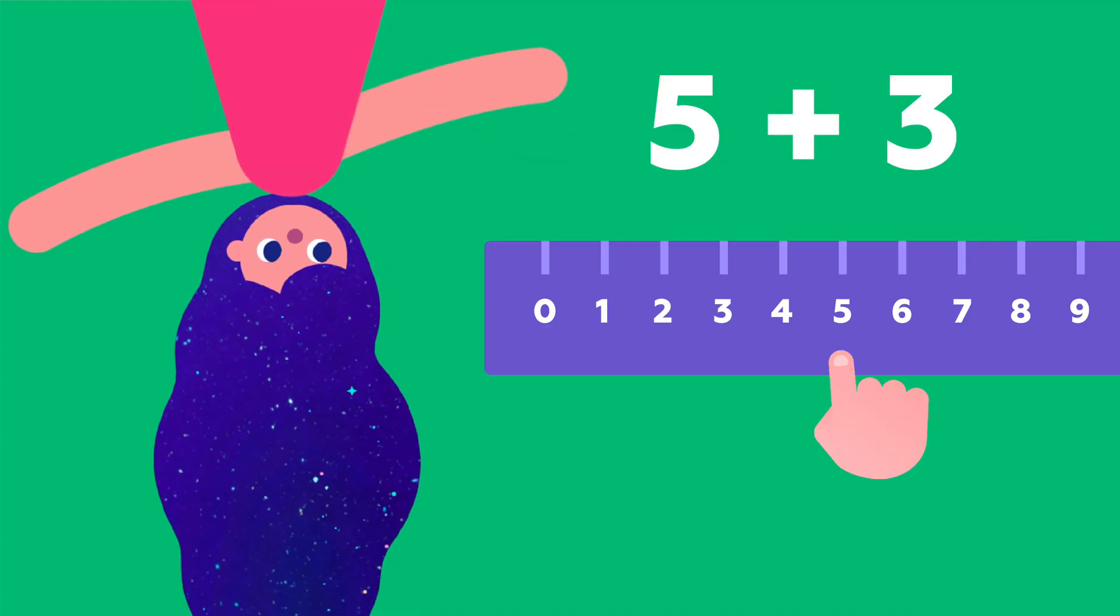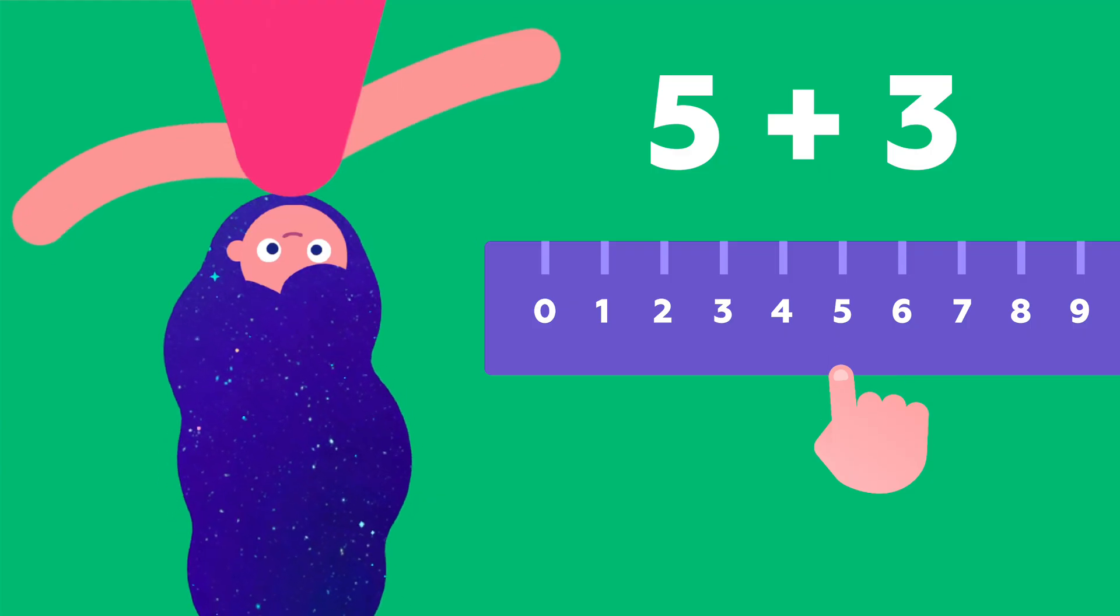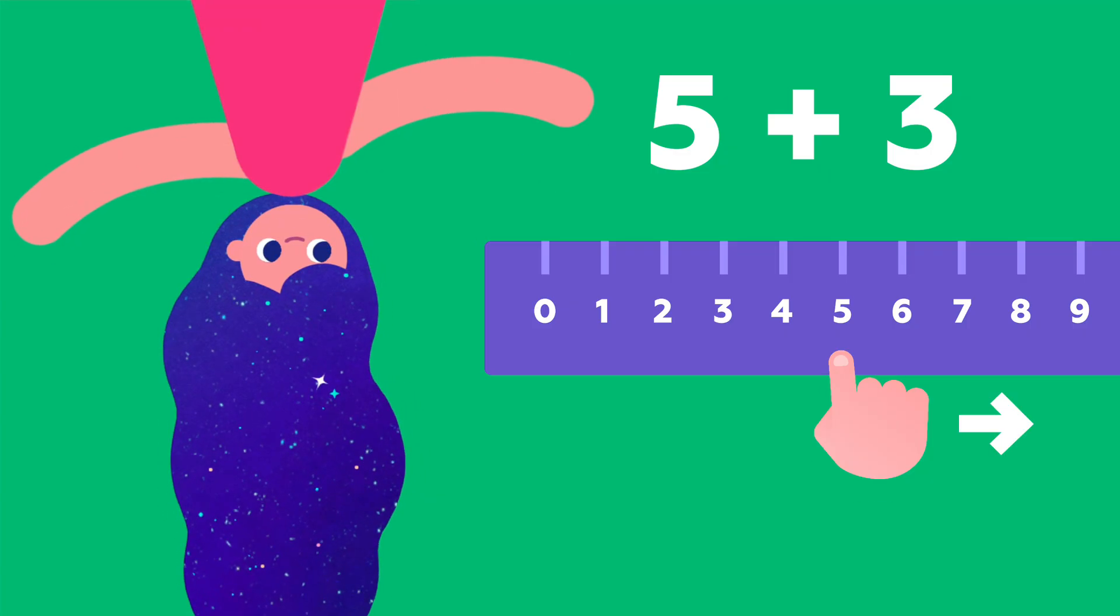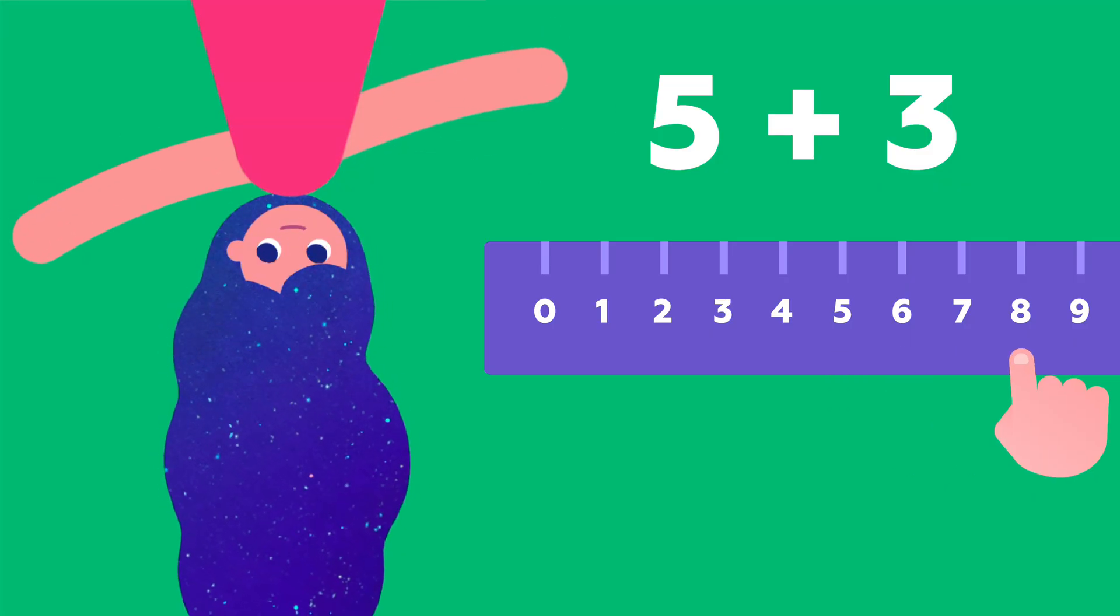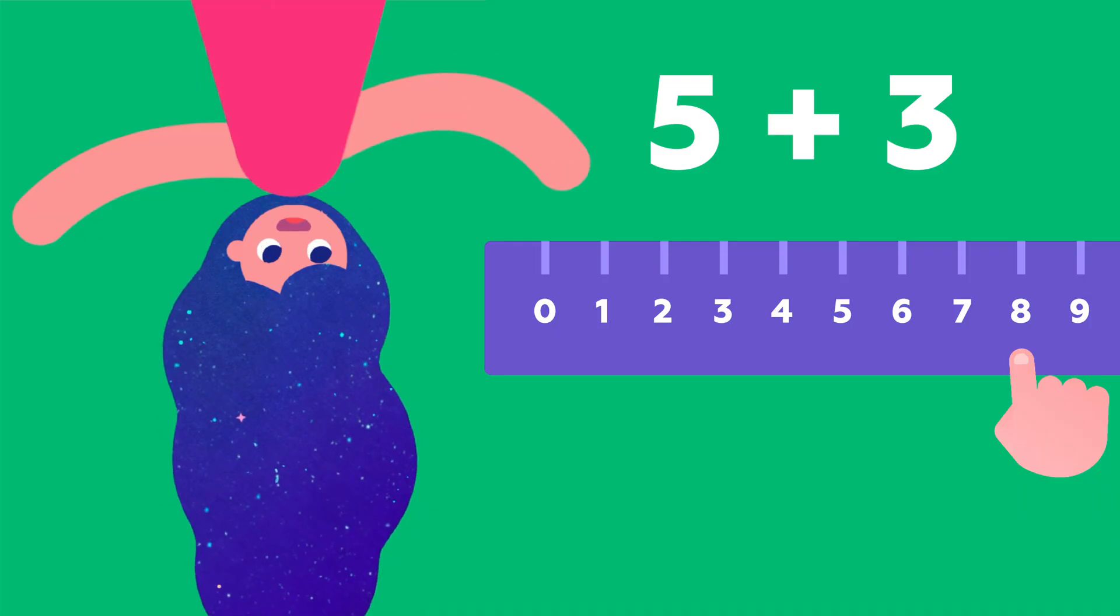To add 5 plus 3, I put my finger on number 5. Then I take 3 steps to the right. 1, 2, 3. And I land on 8. That's my answer, 8.